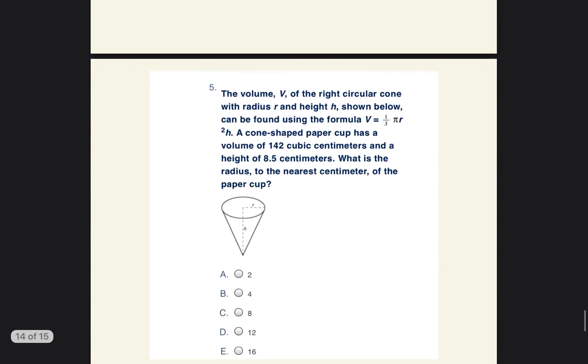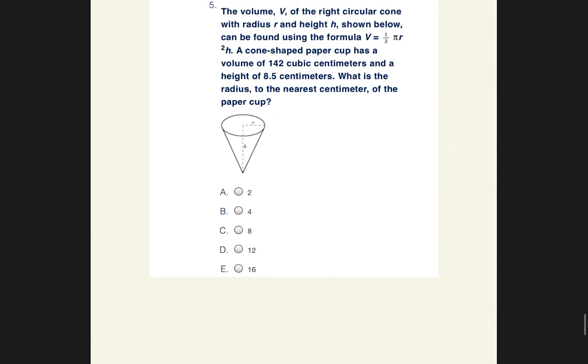All right, so let's go ahead and move on to question number five. It says the volume of the right circular cone with radius R and height H shown below can be found using the formula V is equal to one third pi R squared height. A cone-shaped paper cup has a volume of 142 and the height of 8.5. So volume is 142, and so it says the radius, we don't know what the radius is, and the height is 8.5.